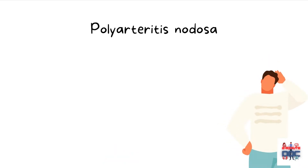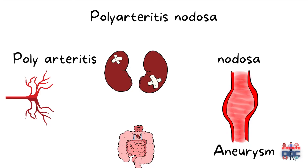So why is it called Polyarteritis nodosa? There's going to be involvement of the renal artery causing renal damage, and involvement of the mesenteric artery which can cause bowel necrosis. There can also be involvement of the coronary artery, testicular artery, and the small arteries supplying the skin. The word 'nodosa' represents the formation of aneurysms, which is localized bulging due to weakness of the walls of the inflamed blood vessels.